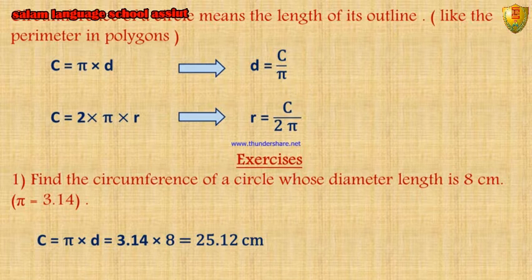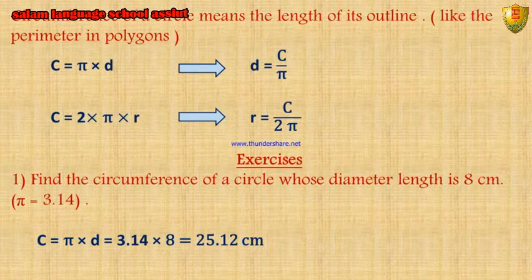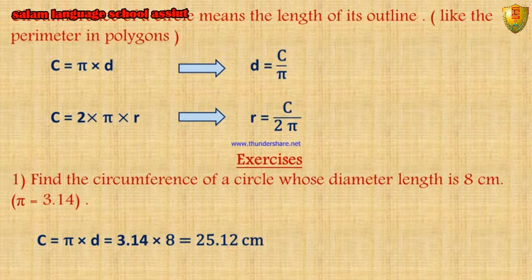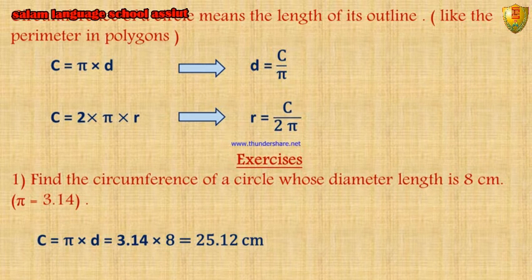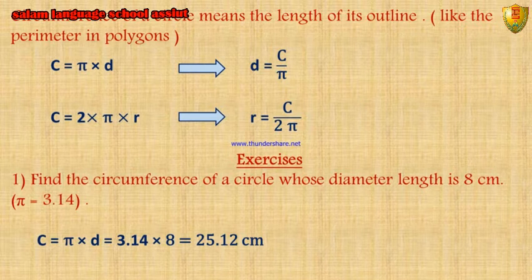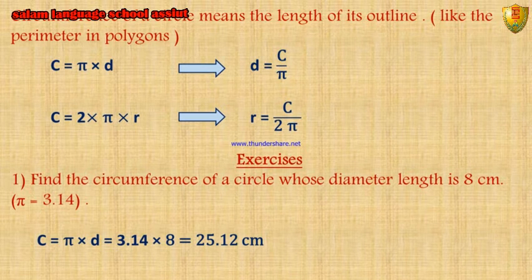Circumference of the circle. Circumference of a circle means the length of its outline, like the perimeter of a polygon. Circumference equals π times D, where D means diameter. We can get the diameter by dividing circumference by π. π is a constant ratio used all over the world. It has two forms: the decimal form π equals 3.14, and the fractional form π equals 22 over 7. Another way: circumference equals 2 times π times r, where r means radius. Radius equals circumference divided by 2π.